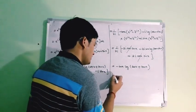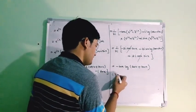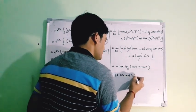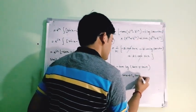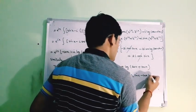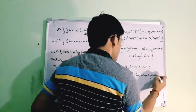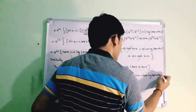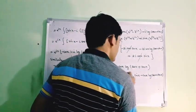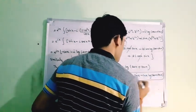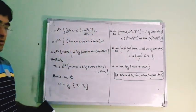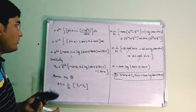Therefore, the particular integral is −cos(x)·log|sec(x)+tan(x)|, and the general solution is: y = c₁cos(x) + c₂sin(x) − cos(x)·log|sec(x)+tan(x)|. Similarly, we can solve the remaining three problems using the same approach.